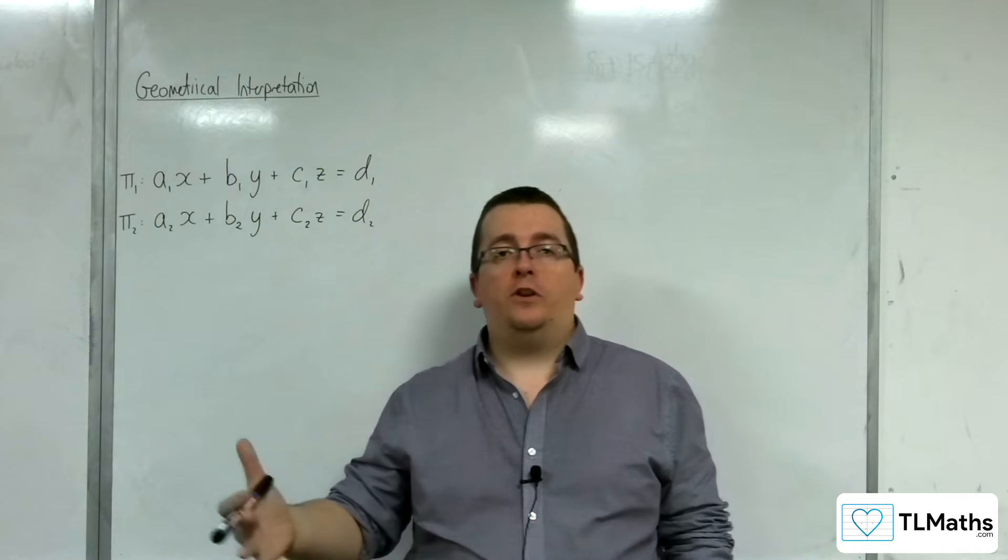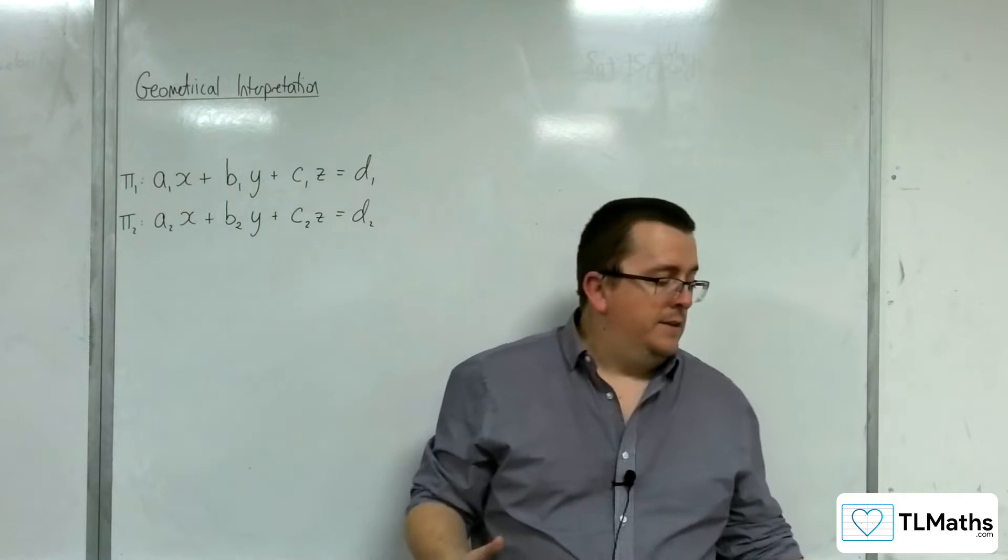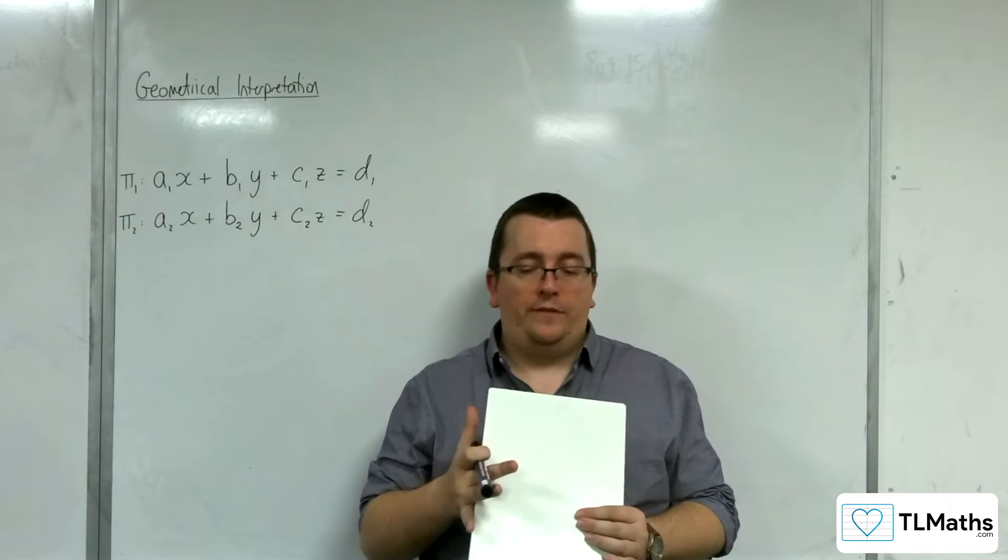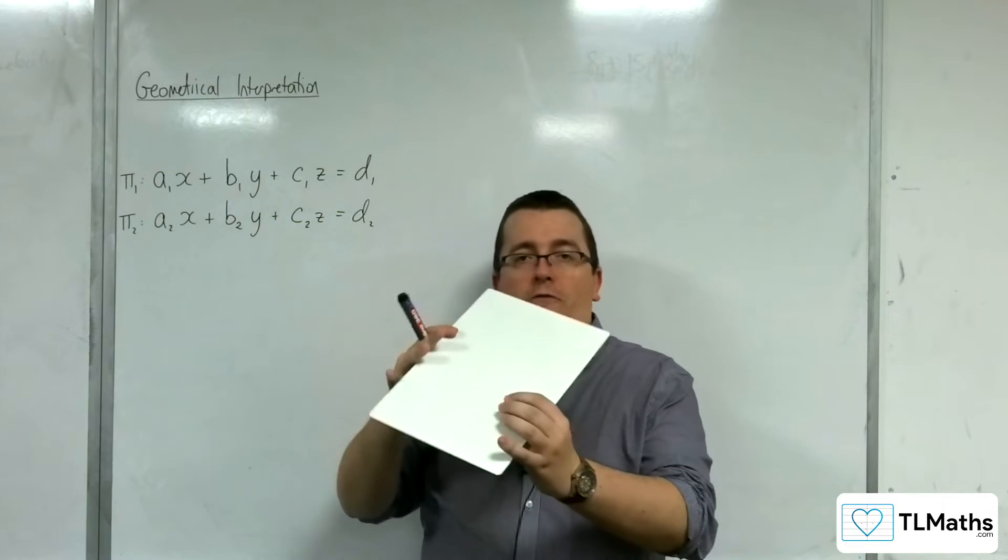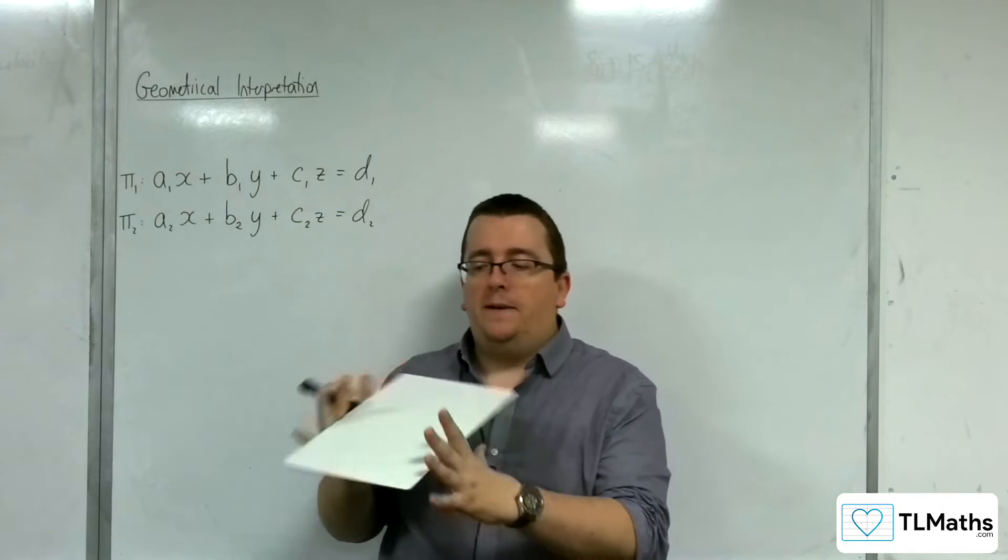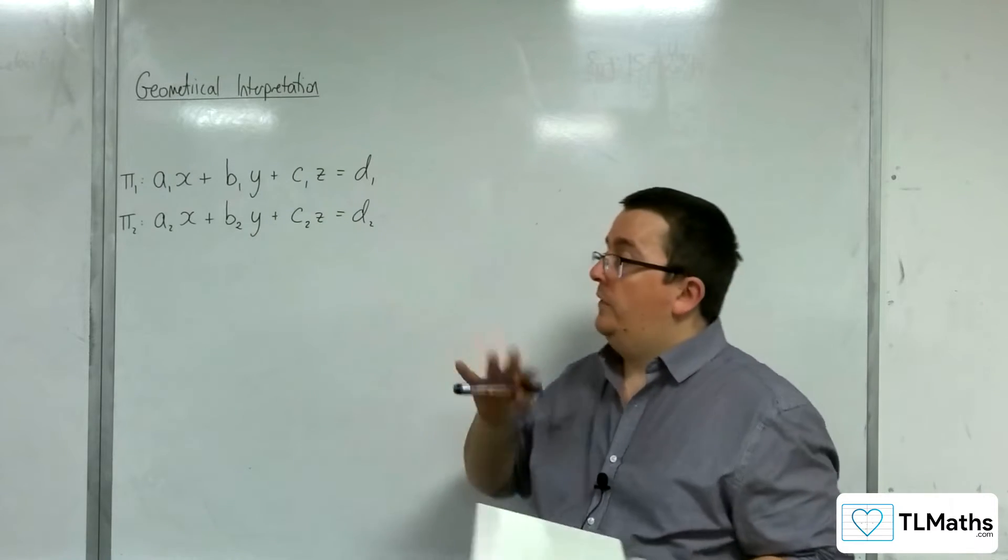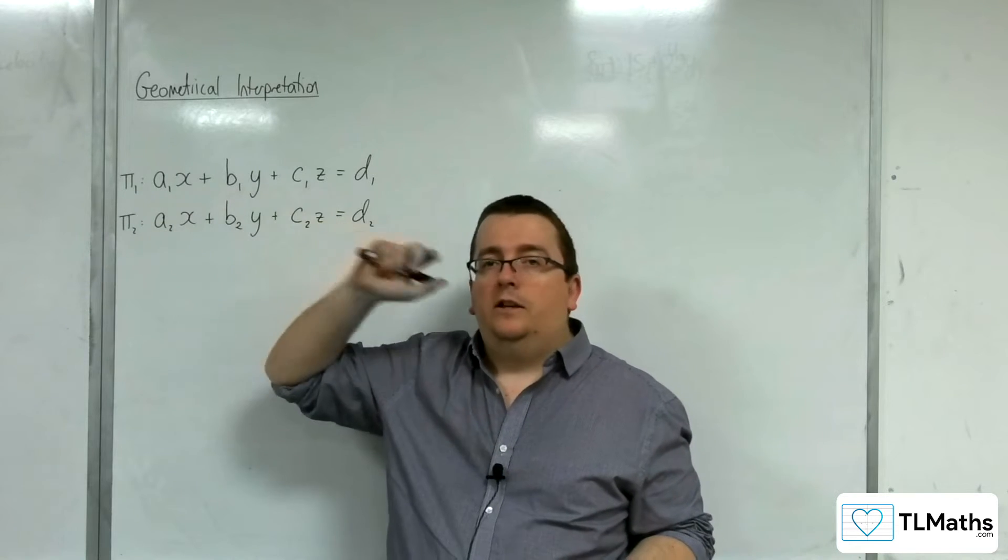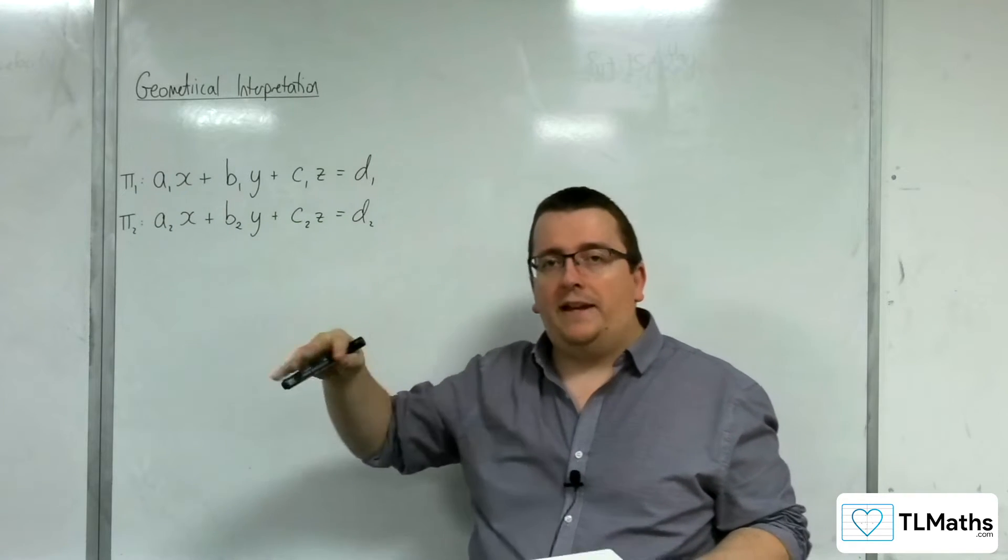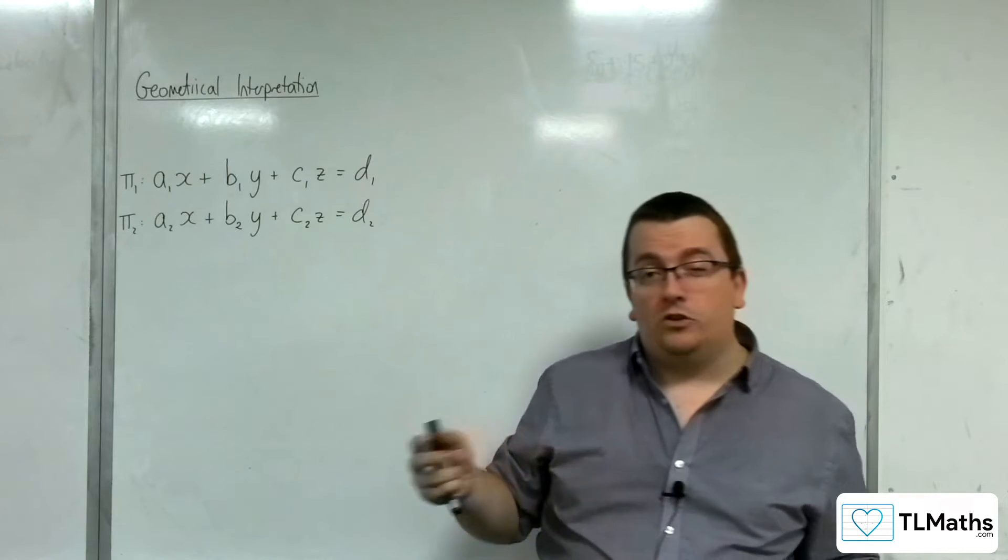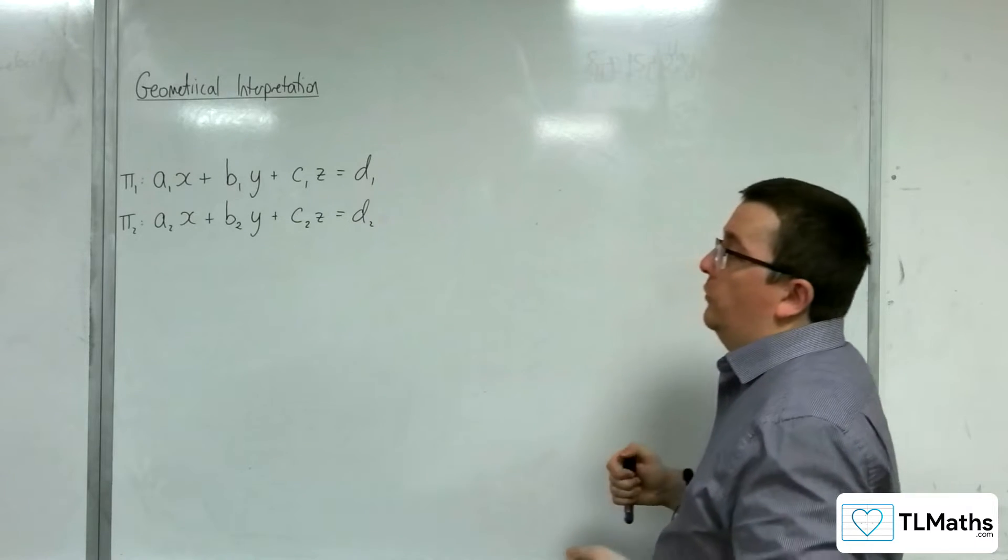In the previous video, I introduced the concept of a plane—this flat three-dimensional surface which goes on forever in all directions. We quite often refer to these planes with the Greek letter pi. We use that to label a plane rather than L for line. L is usually a line, pi is used for plane.